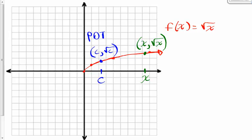Here's what that looks like. So the slope of the tangent line is equal to — I want the green point to get arbitrarily close to the blue one. So I'm taking the limit as this x value, x, gets closer and closer to this x value, c. So I'm taking the limit as x approaches c, and now I'm going to calculate the slope.